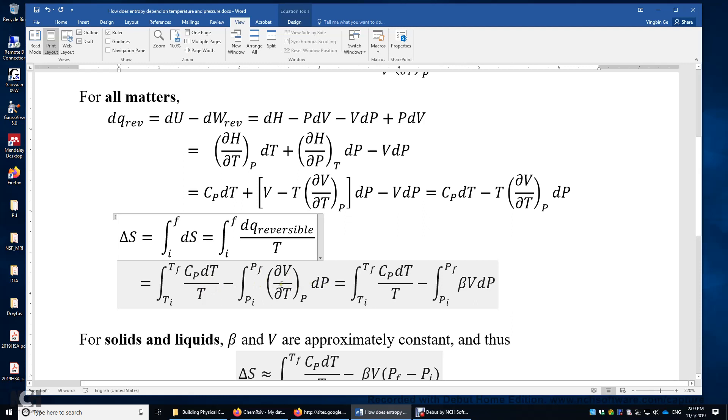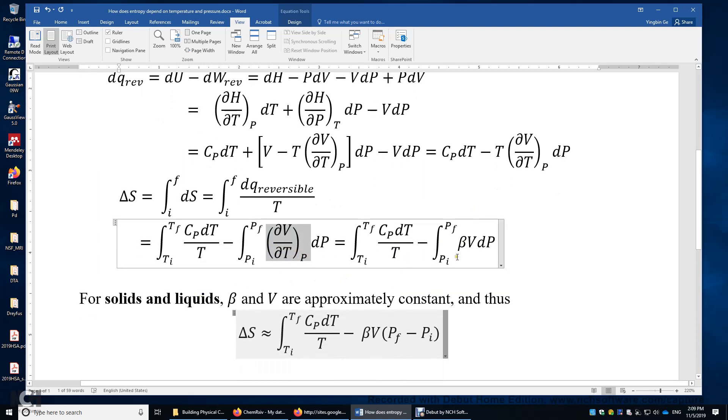And also, because of the definition of beta, we can rewrite this partial derivative as beta times V. For solids and liquids, beta and V are approximately constant. Therefore, we can simplify this integral to be beta times V times the change of pressure.